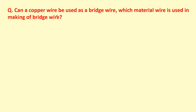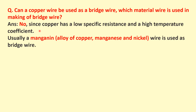Can a copper wire be used as a bridge wire, and which material is used for making the bridge wire? Copper wire cannot be used as a bridge wire because it has very low specific resistance and a high temperature coefficient — meaning a small change in temperature causes a significant change in its resistance. Usually, a manganin wire is used as the bridge wire. Manganin is an alloy of copper, manganese, and nickel.